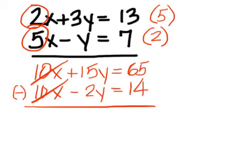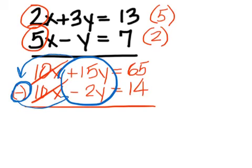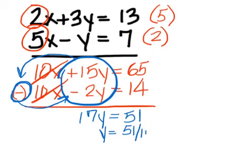15y. 15y. You're doing this now. 15y, but don't forget it's minus. 15y minus a negative 2y. 15y minus a negative 2y is 17y. And 65 minus 14 is 51. Divide 51 by 17, and you come up with 3.